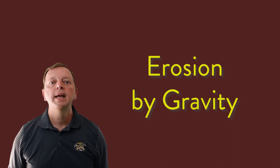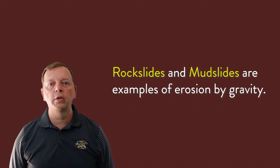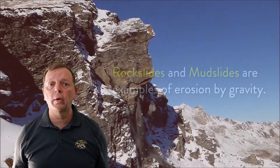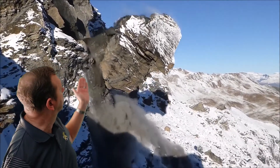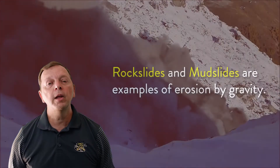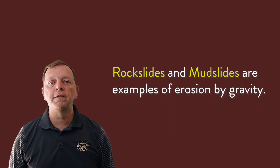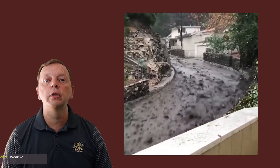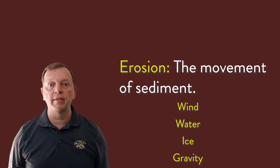The fourth major cause of erosion is gravity. Rock faces are constantly being weathered by chemical and physical weathering. Over time, the rock is no longer able to win its fight against gravity, and gravity will take over — pulling rocks down, such as this rock slide in Switzerland. Mudslides are also examples of erosion by gravity. In areas with lots of rainfall, water will soften the soil, causing the ground to release to the power of gravity. So you can have erosion by wind, water, ice, and gravity.